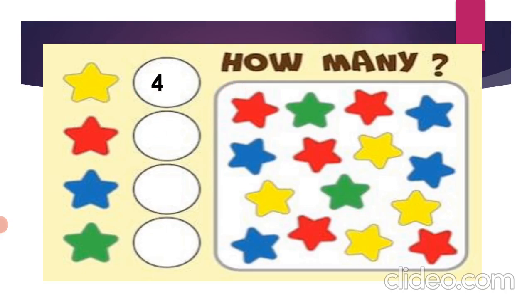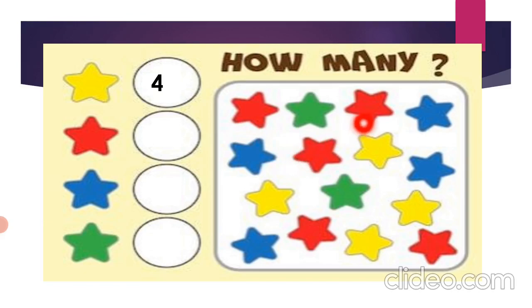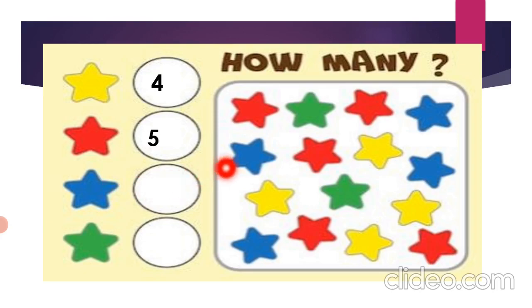Now next is red star. So come on, count how many red stars are there: one, two, three, four, and five. So there are five red stars. Now next is blue. Let's count now: one, two, three, and four. So there are four blue stars.